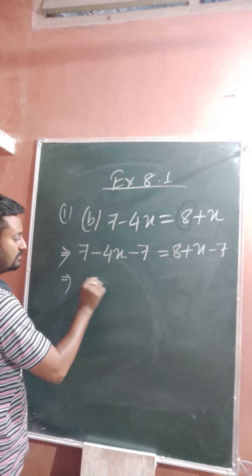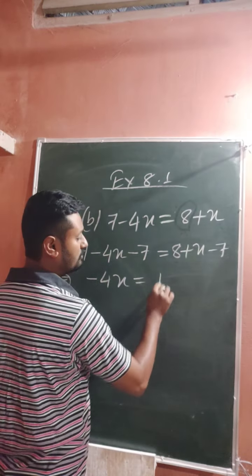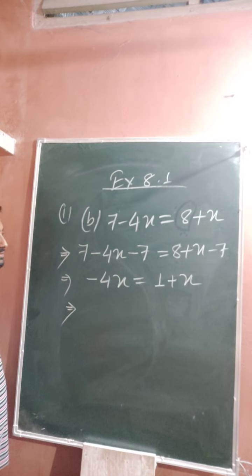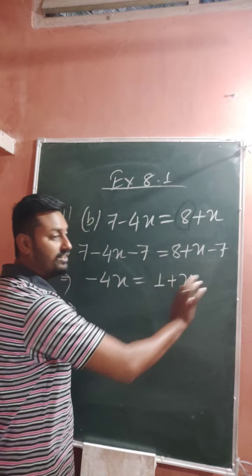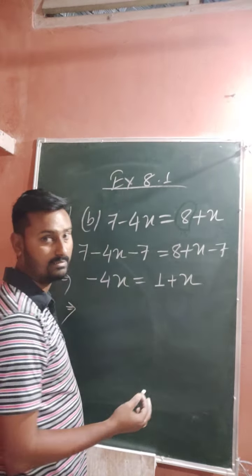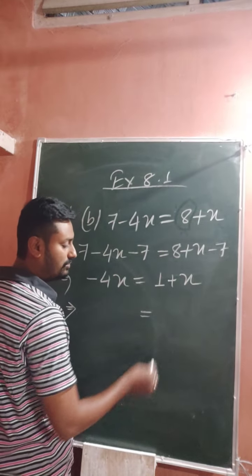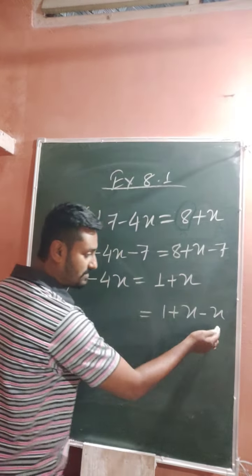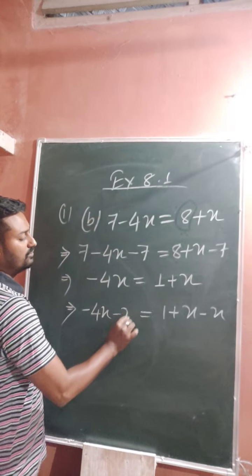So 7 minus 7 becomes 0, and minus 4x remains the same. On the right side, 8 minus 7 is 1, giving 1 plus x. Now you have to remove this x from the right hand side, because your target is to keep x on only one side. So subtract x from the right hand side, and also subtract x from the left hand side.